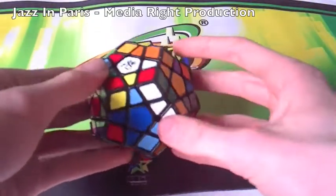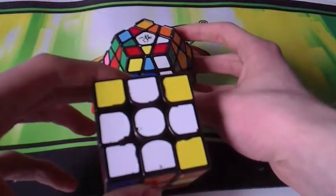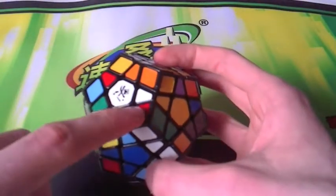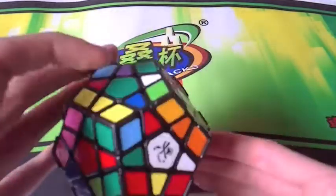So the first step in solving a Megaminx is somewhat similar to solving a 3x3, which is getting a cross on one side. I have to get these five edge pieces in their proper position.